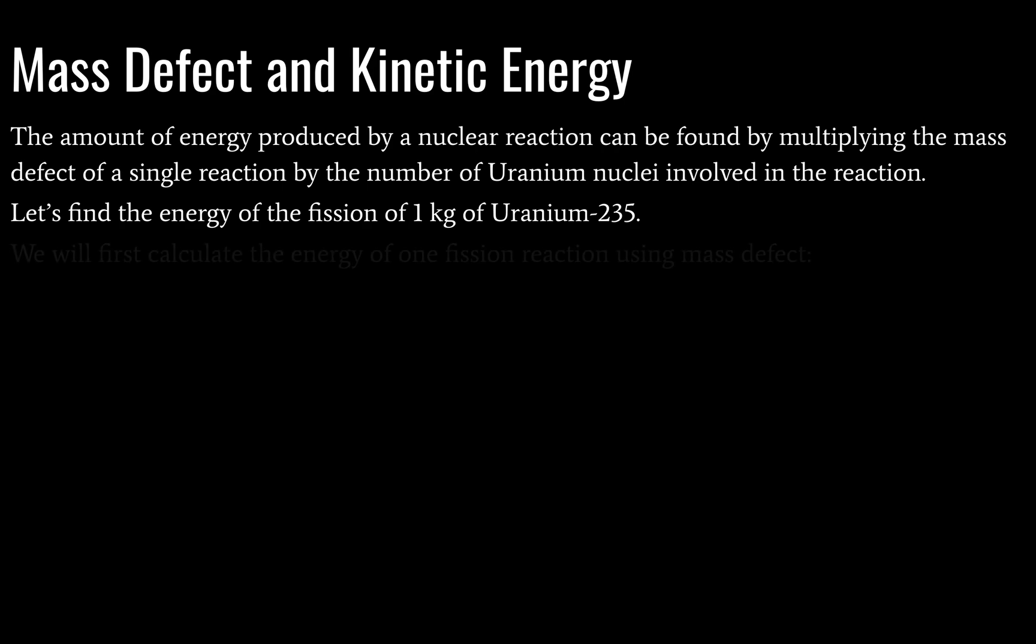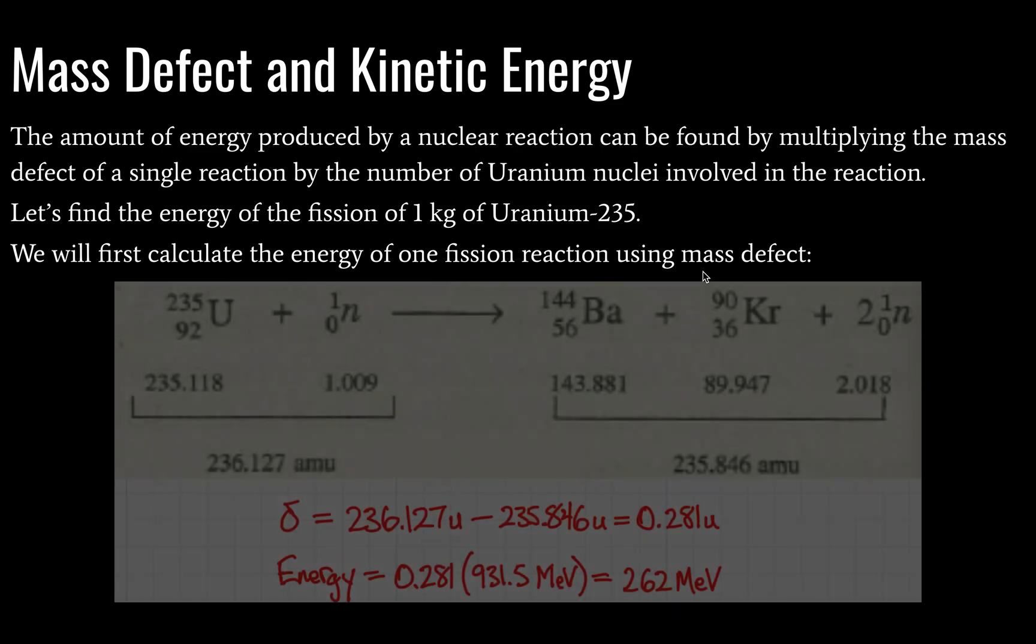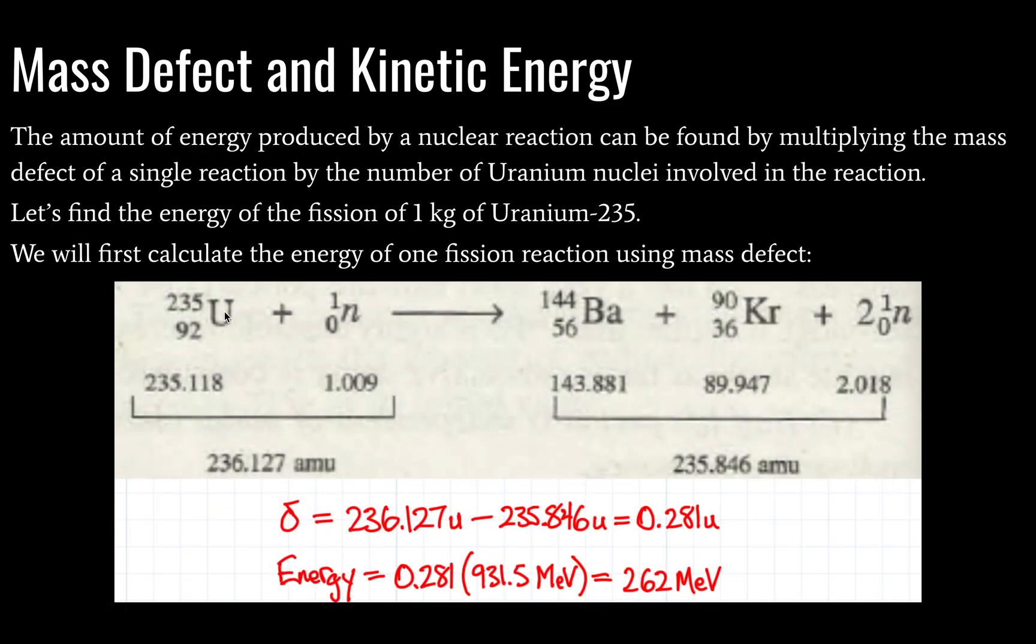So we're going to take a look at the energy of fission of one kilogram of uranium-235. Here's a quick example of some calculations that I threw together. First we calculate the energy of one fission reaction using mass defect. And here we can see our uranium-235 and our neutron, and we have here a total mass of 236.127 unified mass units or atomic mass units. We kind of use the term interchangeably.